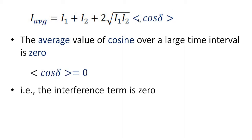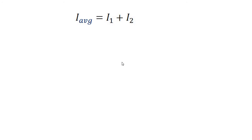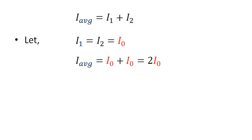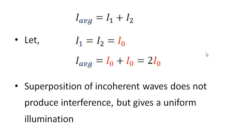Since the average value of cos δ is zero, the interference term becomes zero, and the equation reduces to I_average = I1 + I2. If I1 = I2 = I0, there is no interference term. Due to the superposition of two incoherent waves, the intensity is simply double the individual intensity. There is no increase as in constructive interference, no decrease as in destructive interference — it is just the sum.